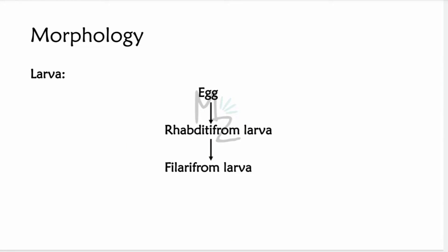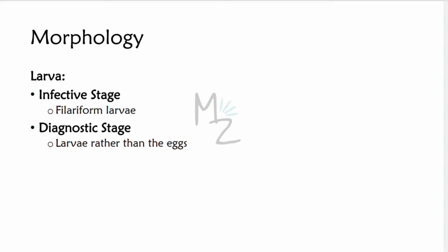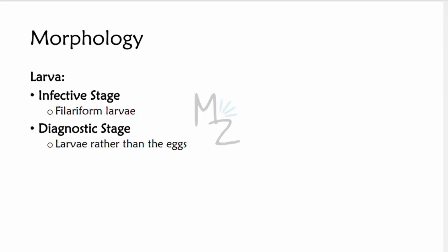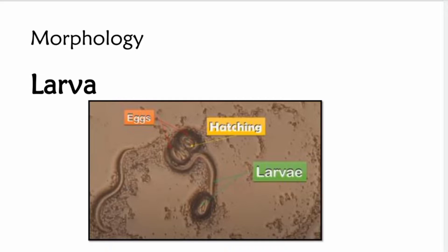When the egg hatches, it releases the rhabditiform larva. This rhabditiform larva then develops into the filariform larva, which is responsible for causing infection. The infective stage is the filariform larvae, but the diagnostic stage is the rhabditiform larvae — in this organism, larvae rather than eggs are the diagnostic stage. In this picture, eggs are shown in orange, the hatching process in yellow, and the released larvae are shown in green.